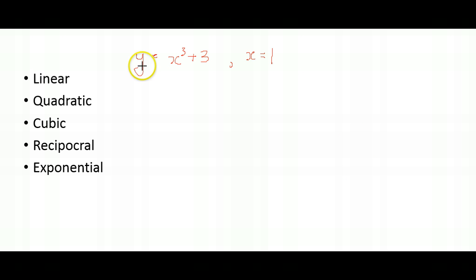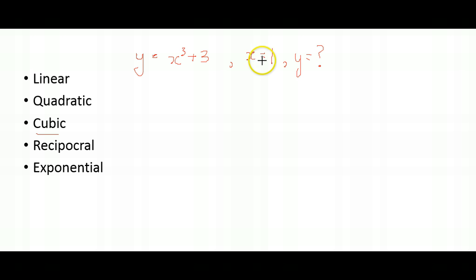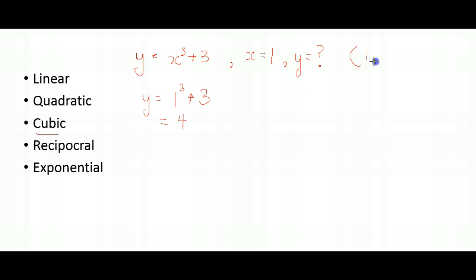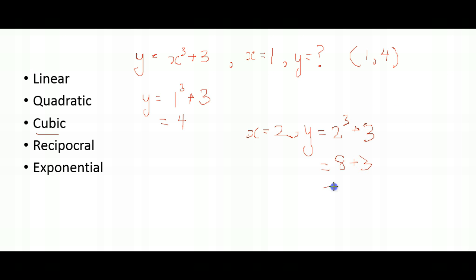Suppose we have the graph y equals to x-cubed plus 3 — this would be a cubic equation since we have to the power of 3. If x equals to 1, we simply substitute into the equation: 1-cubed plus 3 equals to 4, so the coordinate would be (1, 4). What about if x equals to 2? y would be 2 to the power of 3 plus 3, which is 8 plus 3 equals to 11. Thus the coordinate would be (2, 11).